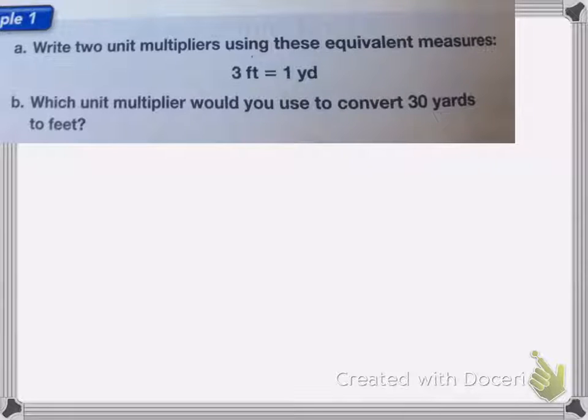Remember, a unit multiplier is what we multiply an amount by to convert it from one label to another label, or from one unit to another unit. So it looks something like this.